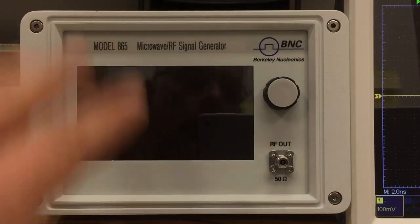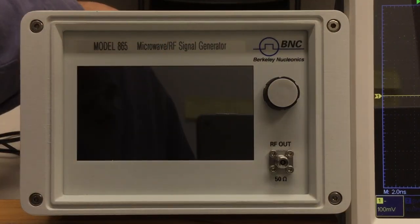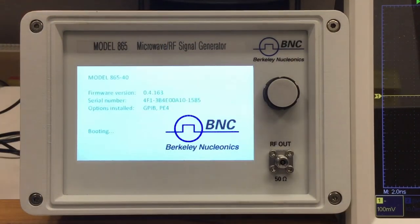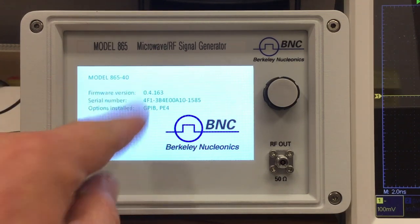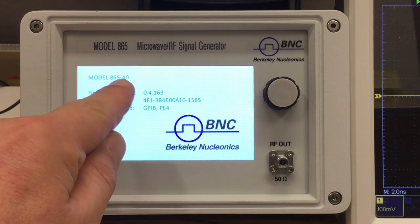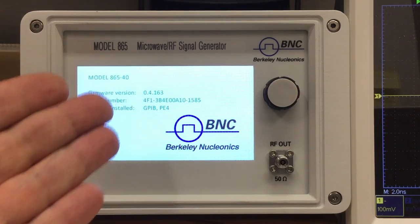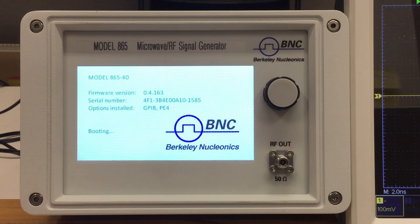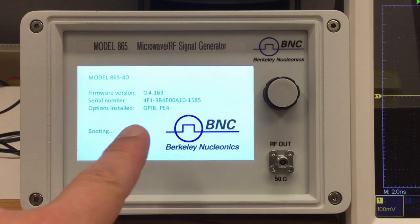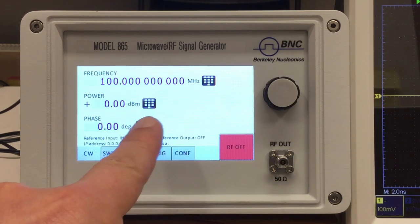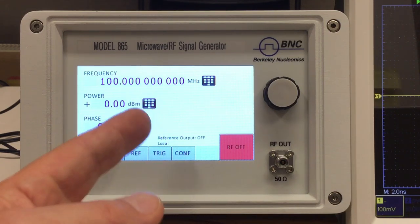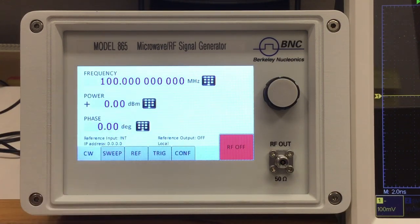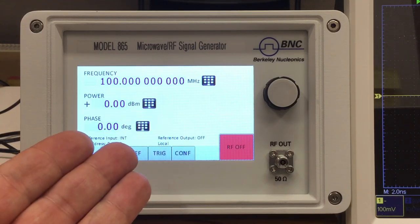We're back at the front and I will cycle now the power. You get a booting message with the model number. Mine is a 865-40, meaning it's a 40 gigahertz unit. Your firmware version, your serial number and the installed options. We saw the GPIB connector at the back and the PE4 option. I will talk about that in a second. Anyway, here we are.